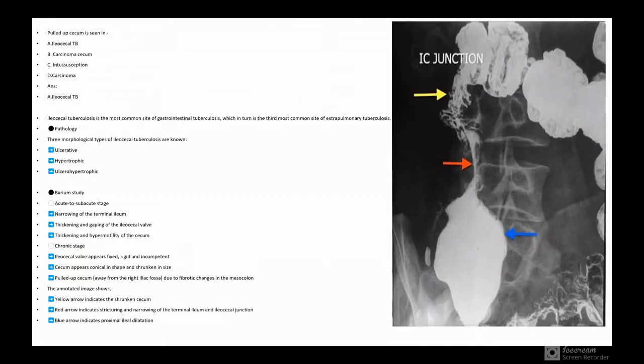Coming to the next pointer, you can see the arrow is marked. An MCQ like pulled up cecum is seen in - the options may be ileocecal TB, carcinoma cecum, intussusception, carcinoma. The answer here will be ileocecal TB. Ileocecal tuberculosis is the most common site of gastrointestinal tuberculosis, which in turn is the third most common site of extrapulmonary tuberculosis.